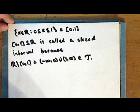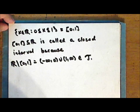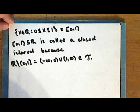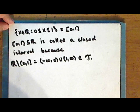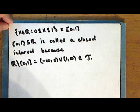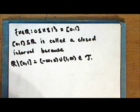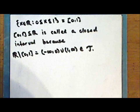We will study the standard topology on the real line in a later lecture, but for now just recognize that the terms open and closed occur in the context of the standard topology on the real line, and in the absence of a specified topology on the real line, the standard topology is implied.